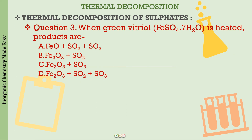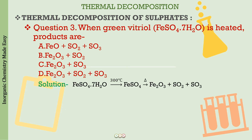Question 3: When green vitriol (FeSO4·7H2O) is heated, the products are — The correct answer is: Fe2O3 + SO2 + SO3.